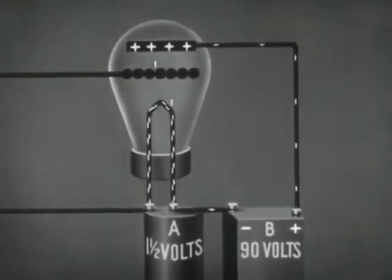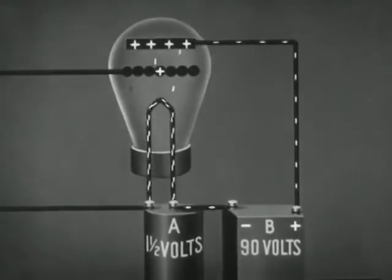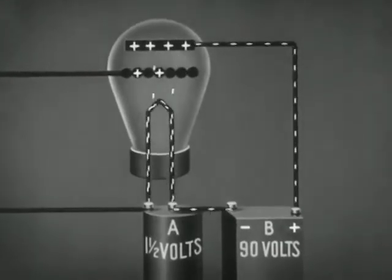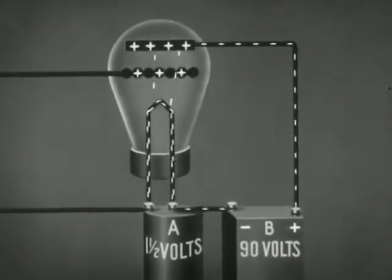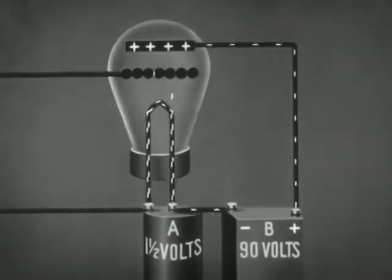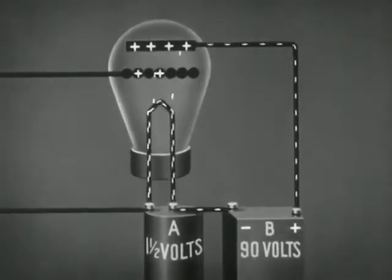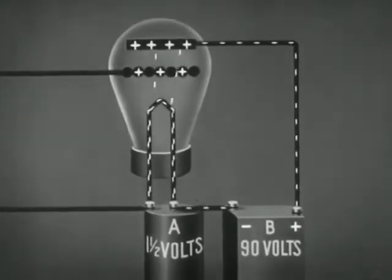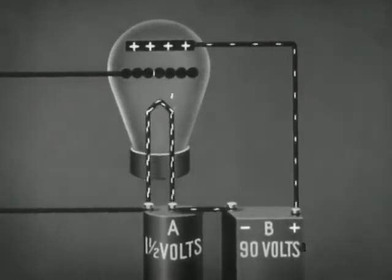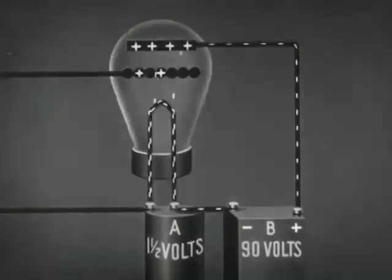The vacuum tube may be used to amplify the weak voltage induced in the aerial circuit. Its use as an amplifier is possible because a small change in the grid voltage brings about a large change in the amount of plate current. The grid, therefore, actually controls the powerful current generated by the high voltage battery.